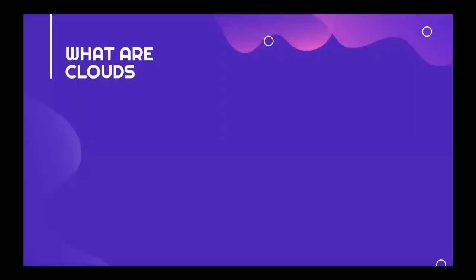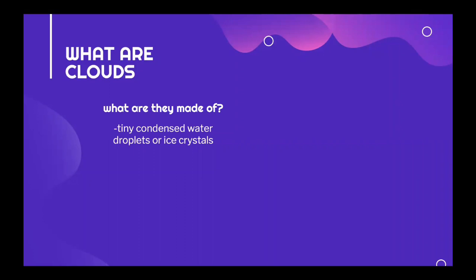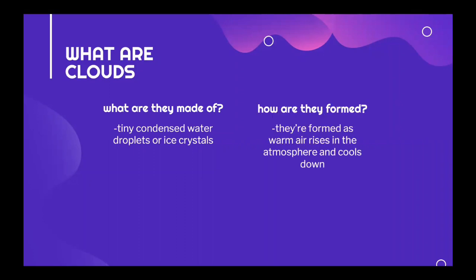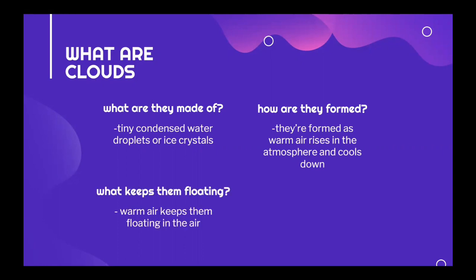So what exactly are clouds? Well, clouds are made of condensed tiny water droplets or ice crystals. They're formed as warm air rises in the atmosphere and cools down. Warm air is actually what keeps the clouds floating in the air. And finally, clouds can sit on different levels of the sky and they're usually described by the elevation at which they form.